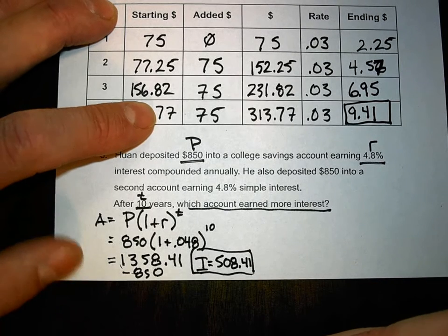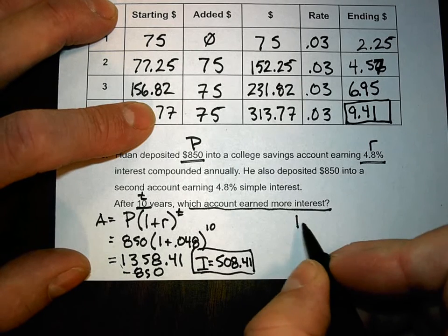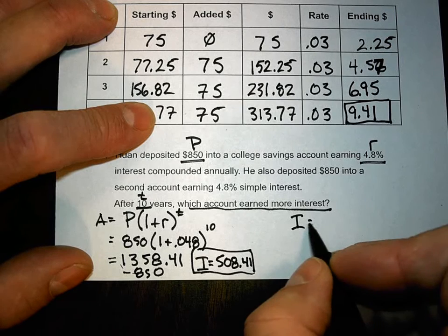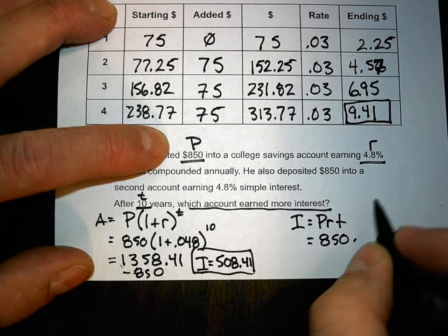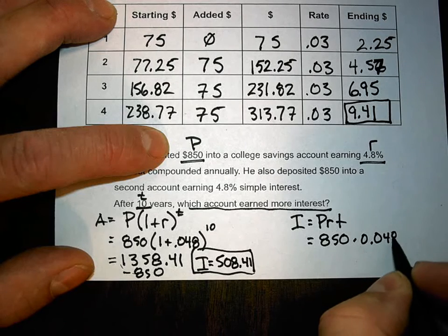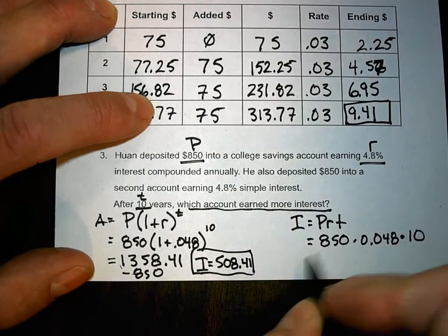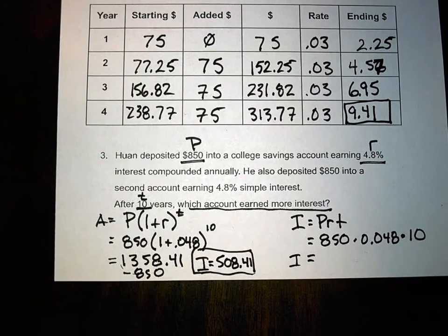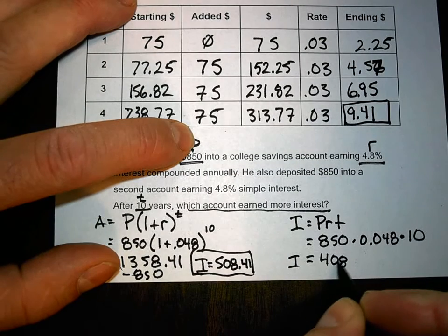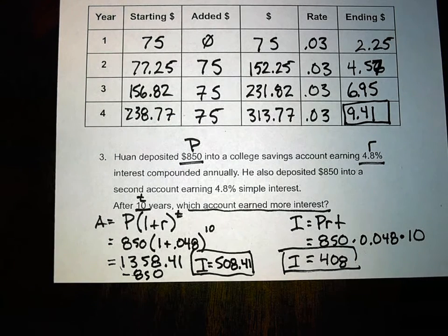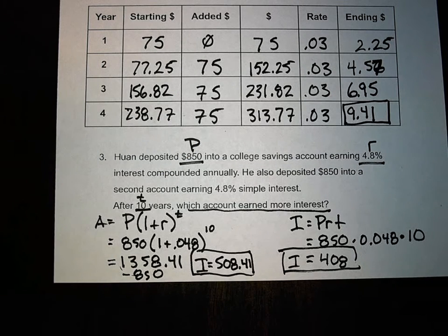Now for the simple interest account — same statistics. Simple interest gives us I directly: I equals principal times rate times time, which is 850 times 0.048 times 10.